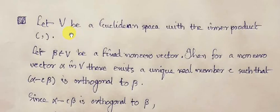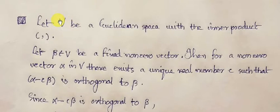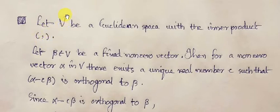Here we are continuing lecture number 10. V is the Euclidean space, and this notation — a parenthesis with a single comma — is the inner product function upon V.